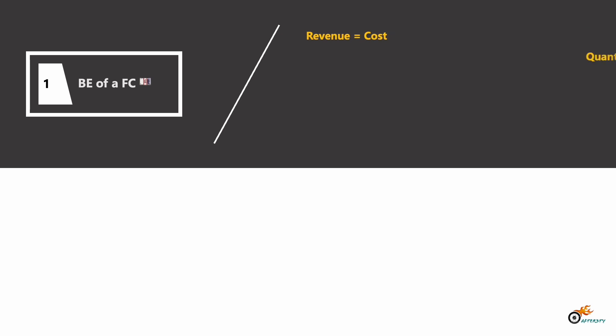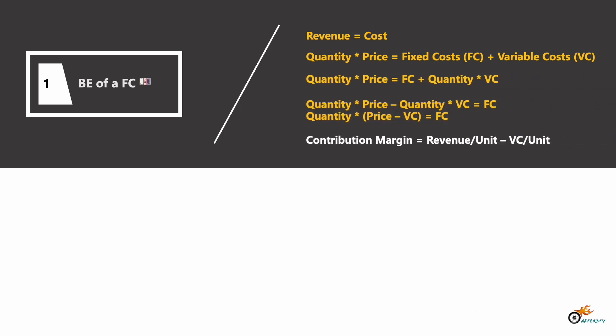To figure out how to calculate the break-even point, we have to know what it means. Basically, it means revenue is equal to cost. Revenue can be divided into quantity and price, so we get: quantity times price equals fixed cost plus variable cost. Rearranging, quantity times (price minus variable cost) equals fixed cost. An important concept here is the contribution margin, which equals revenue per unit minus variable cost per unit.